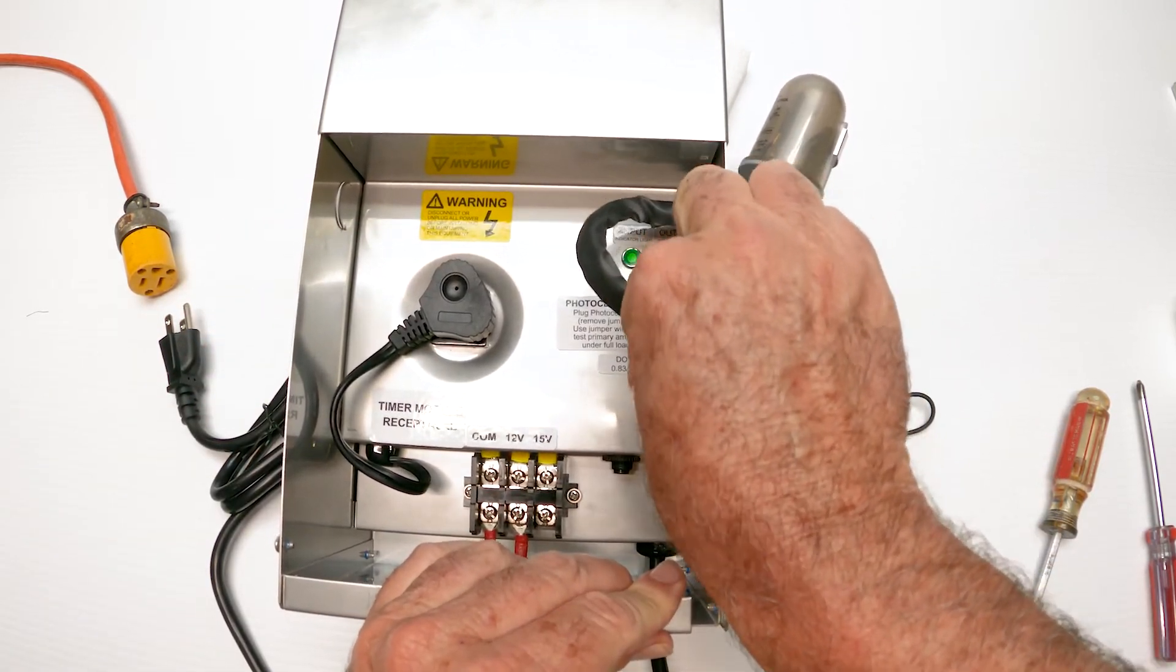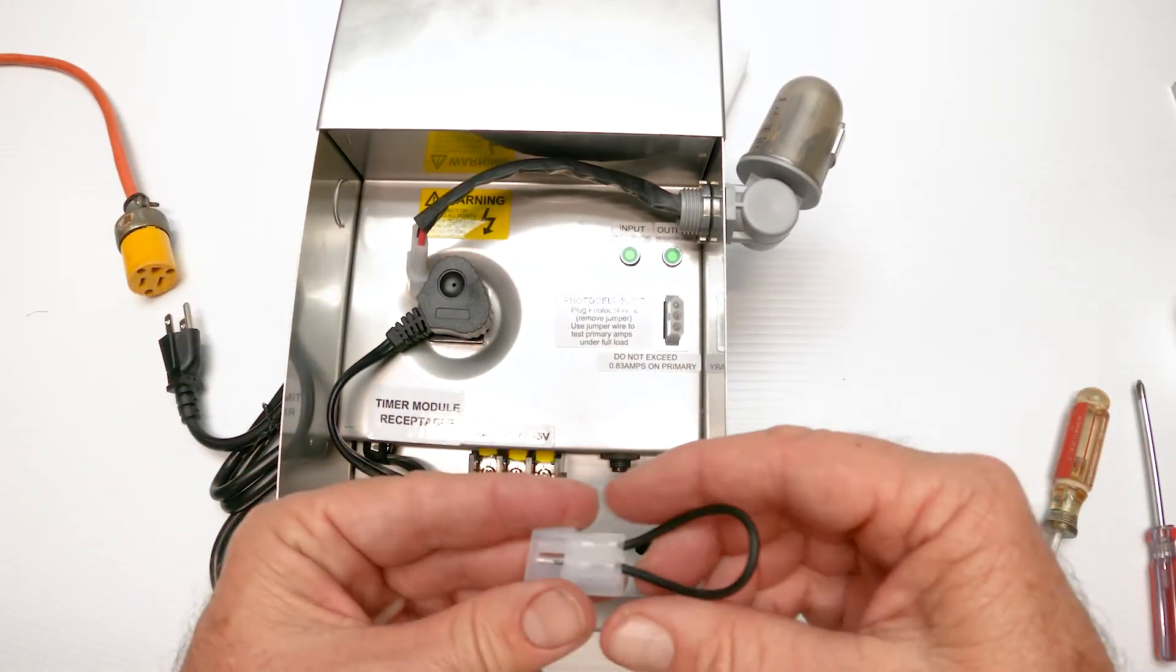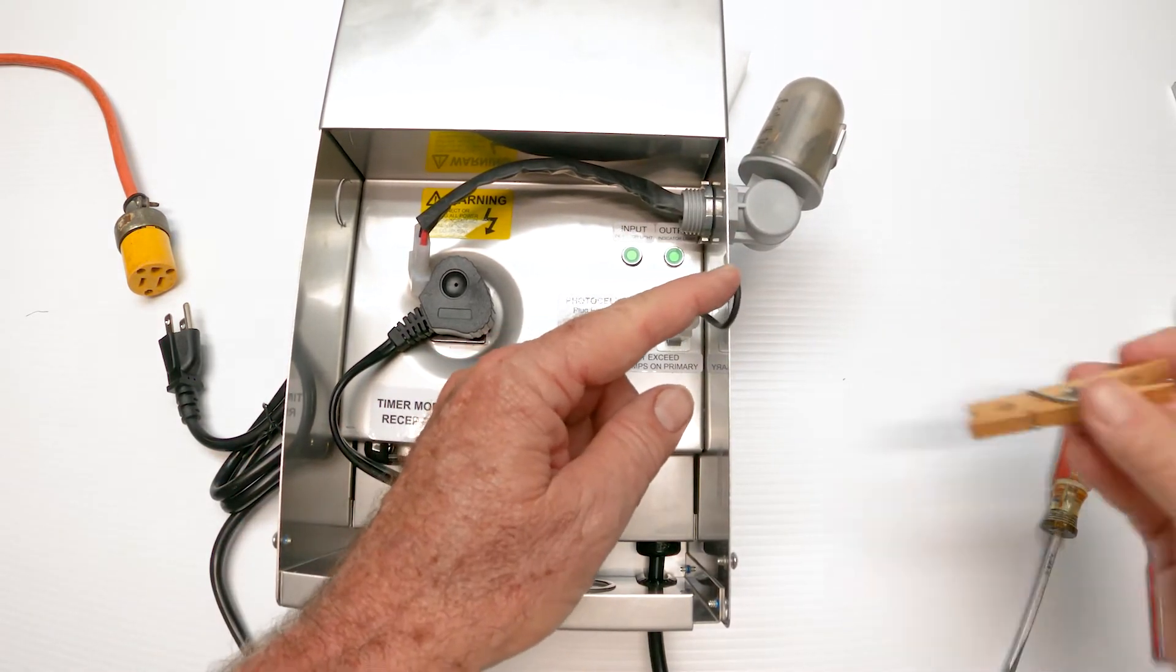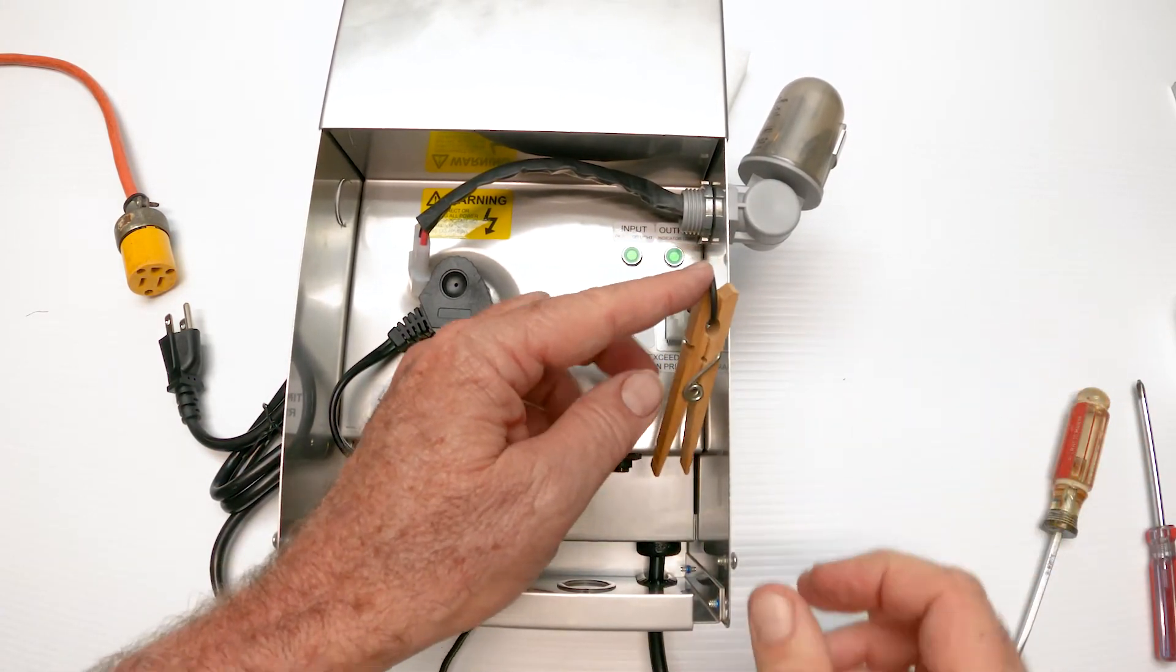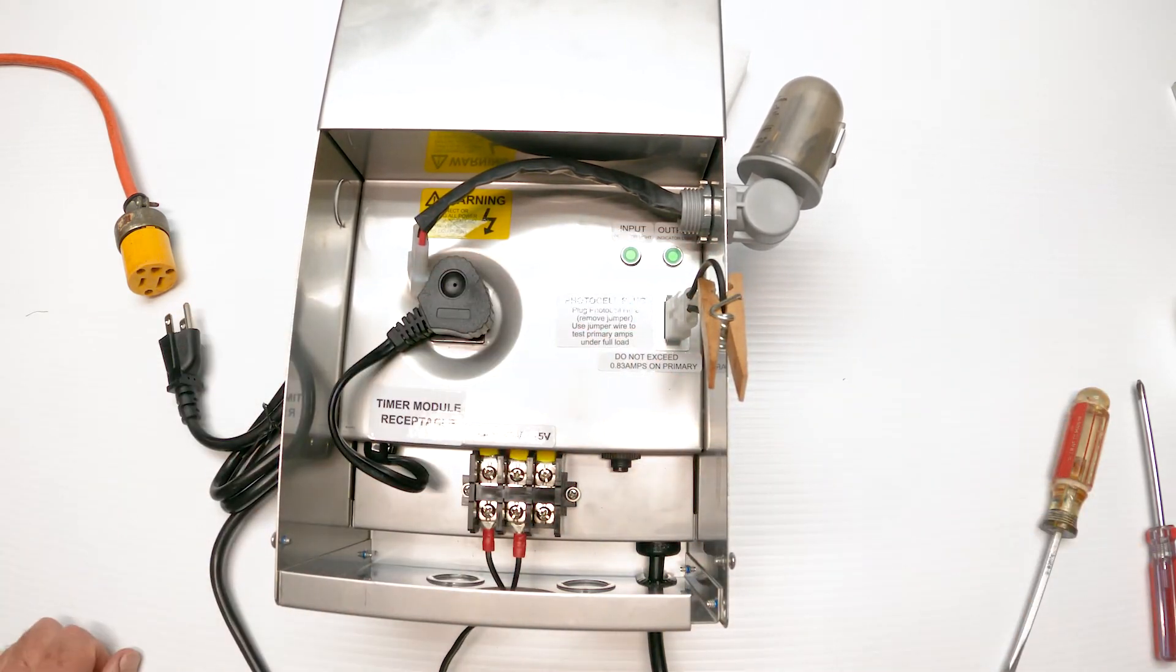I'm going to unplug the photo cell. Isn't it nice? They just plug in. I'm going to just put the wire up here. I'm going to put my jumper back. The jumper's got to be here. Remember the jumper with the little wire on top? I put the clothespin on so it would be out of the way so you can see inside the transformer box.